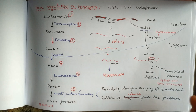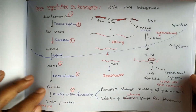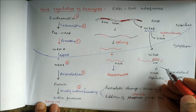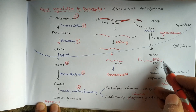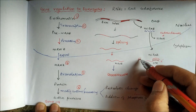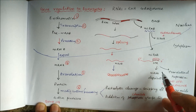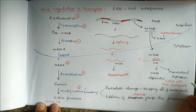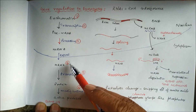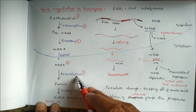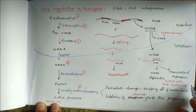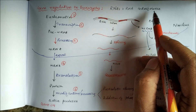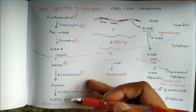The introns actually produce non-coding RNA. One example is micro RNA (miRNA), which is a non-coding RNA that can bind to the untranslated region at the 3' end of the messenger RNA. It can cause messenger RNA degradation or block the ribosome from passing through the mRNA to suppress translation. Thus, micro RNA degrades messenger RNA or inhibits translation, thereby causing gene silencing.